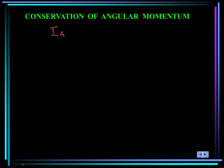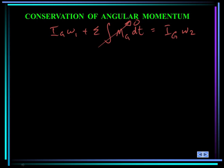Now let's talk about the conservation of angular momentum. The equation is the moment of inertia about the mass center times omega at state 1, plus the sum of the integrals of the moments about the mass center over time, equals the mass moment of inertia times omega 2. If the moments are zero, angular momentum is conserved for both states. This is the conservation of angular momentum equation. If the initial conditions of the rigid body are known, this is often used to determine the final linear or angular velocity just after an event occurs.